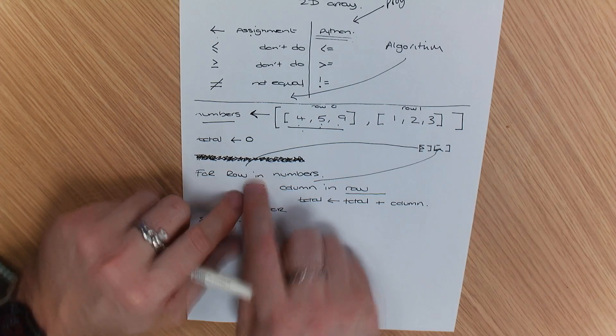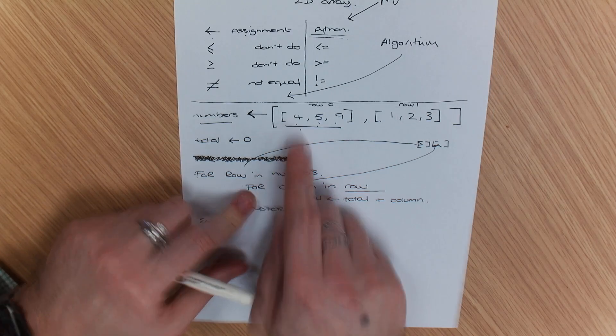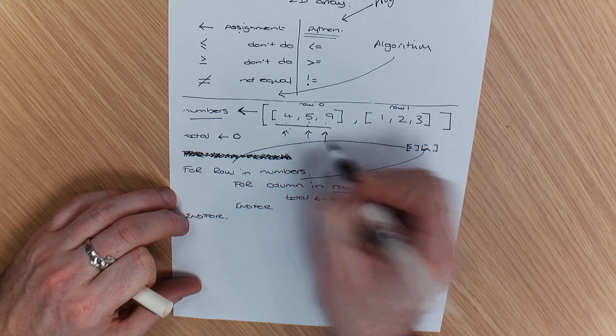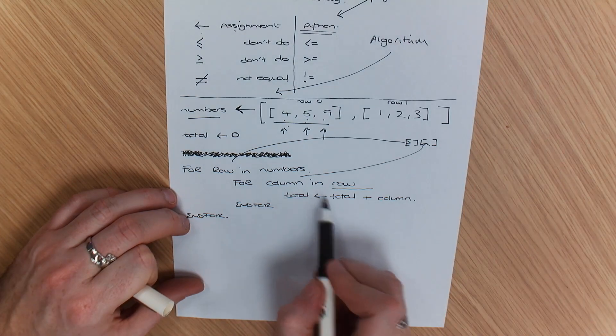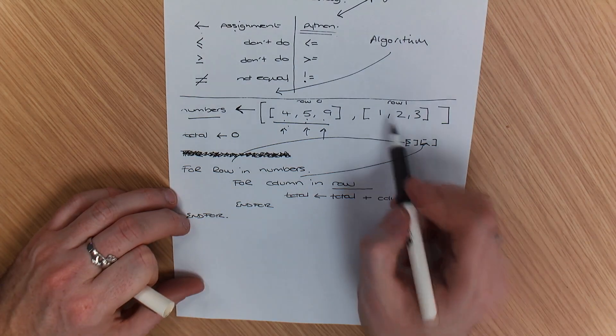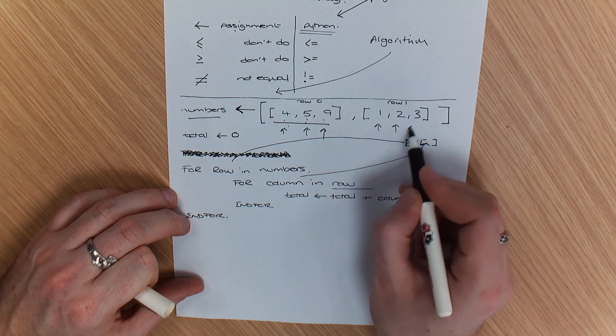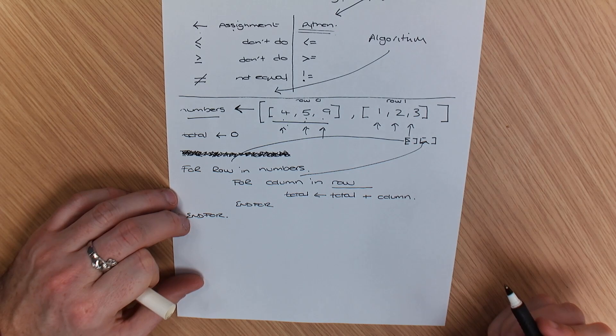The second number is the position in that row. So that's why I went on to this one, iterates through that, then that, then that. Then when it's finished that, that row increases. So then it goes back. Then it goes that, then that, then that.